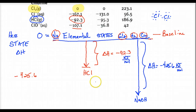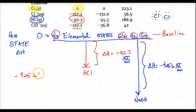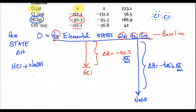These are the collective heats of formation of the products. If I know the heat of formation of my reactants and the heat of formation of my products, I can figure out what the heat of reaction is — the total change in the reaction. Let's do HCl plus NaOH. Very simple acid-base reaction. As we all know, it's going to make sodium chloride aqueous plus water.